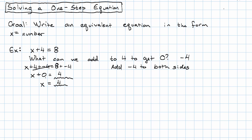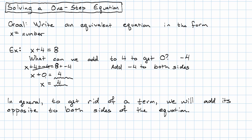More generally, what should we do if we have an equation in the form, x plus a number equals a number. In general, if we want to get rid of a term, we need to add its opposite to both sides of the equation. So let's see another example.